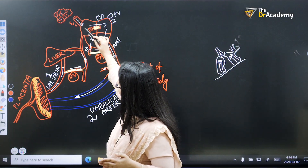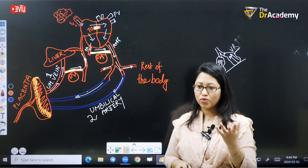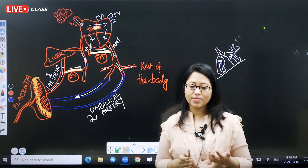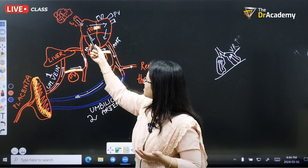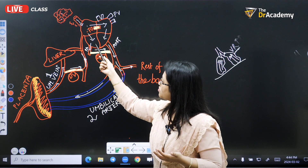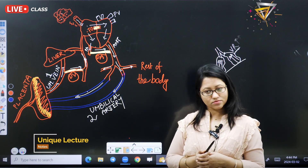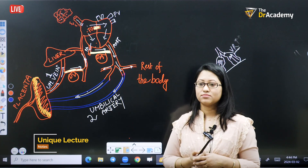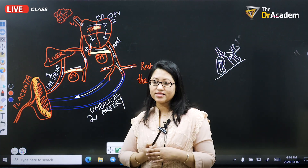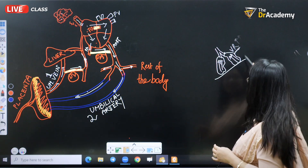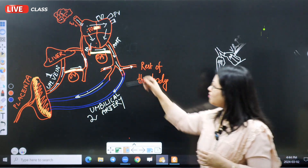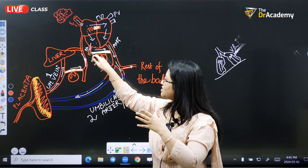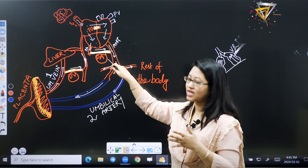Whenever blood from the inferior vena cava and superior vena cava comes to the right atrium, the blood directly goes to the left atrium through the foramen ovale, and a smaller amount goes to the right ventricle. From the right ventricle, the blood goes to the pulmonary artery. But since vascular resistance in the lungs is very high, the blood cannot go to the lungs, so it goes to the aorta directly via the ductus arteriosus.